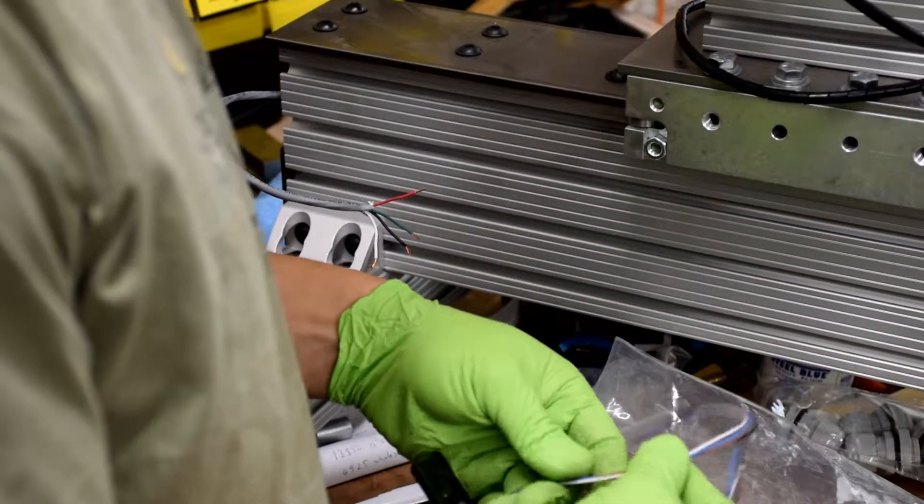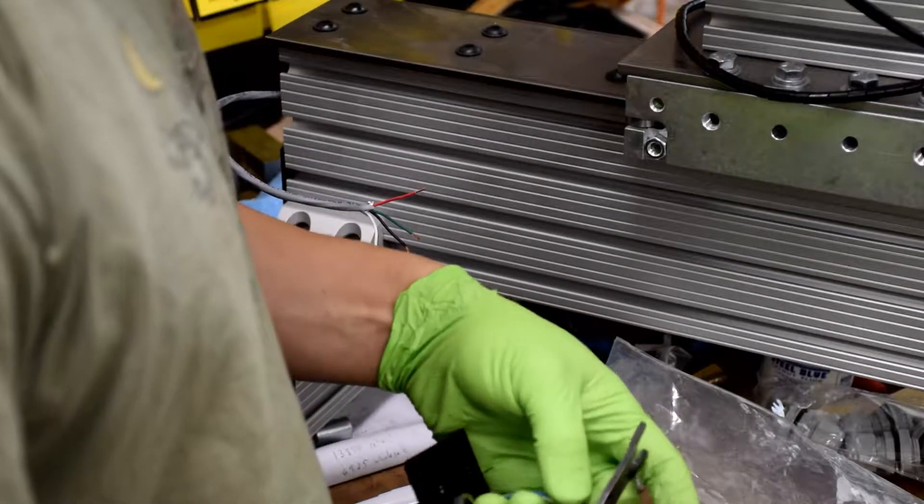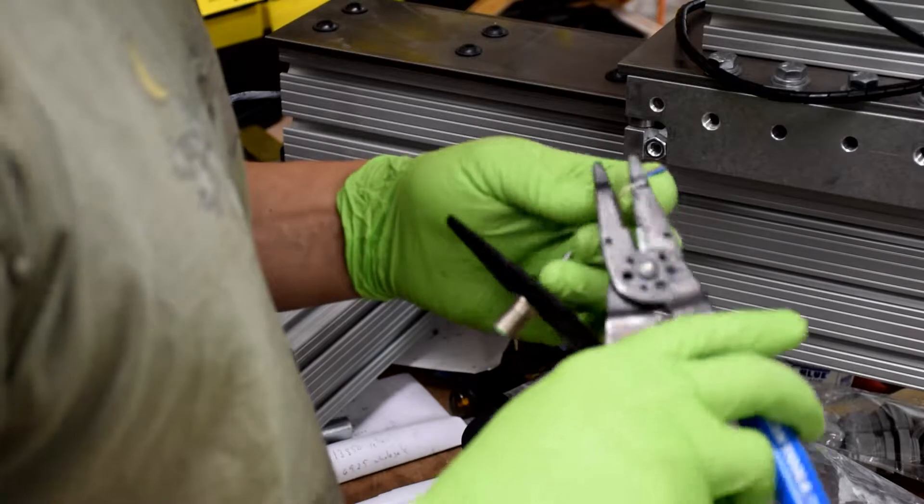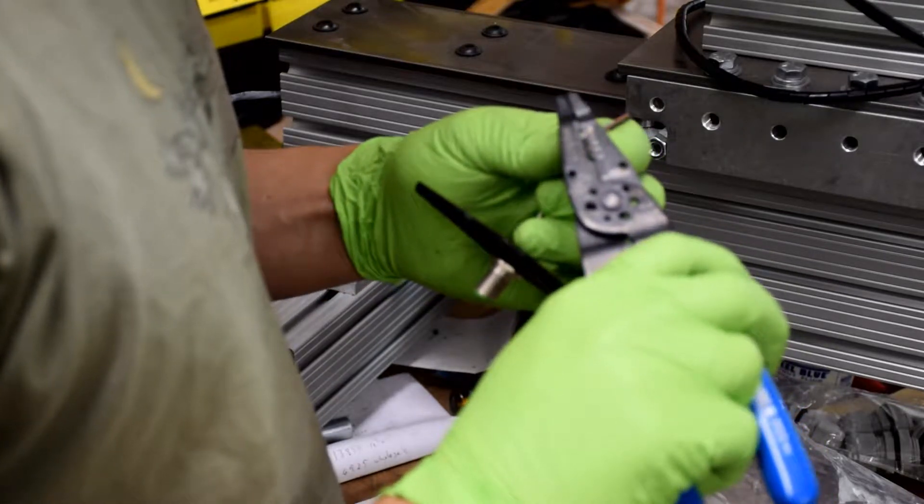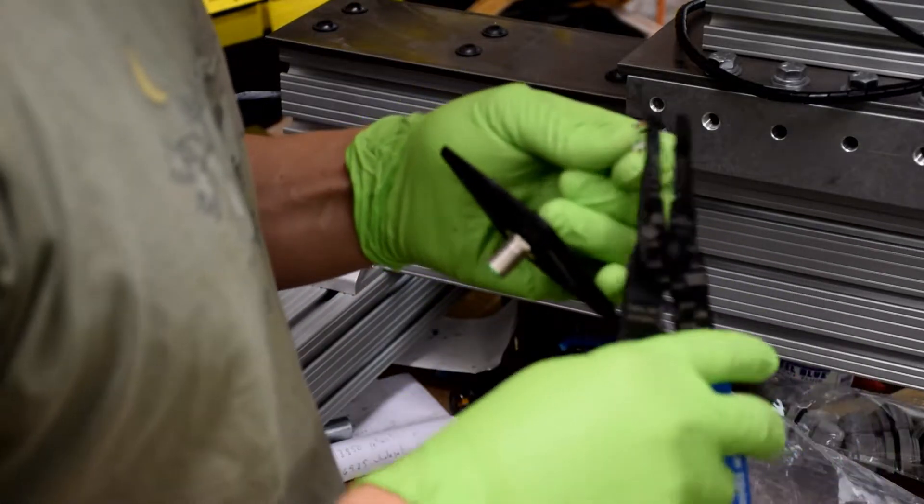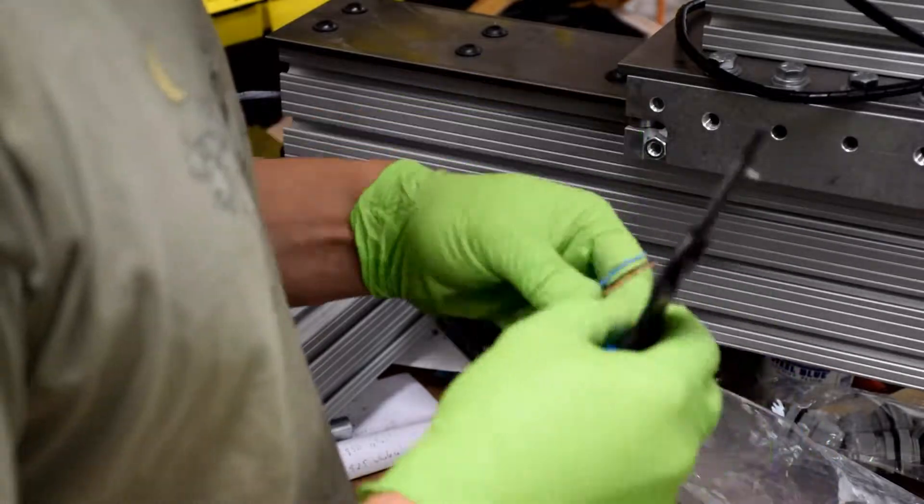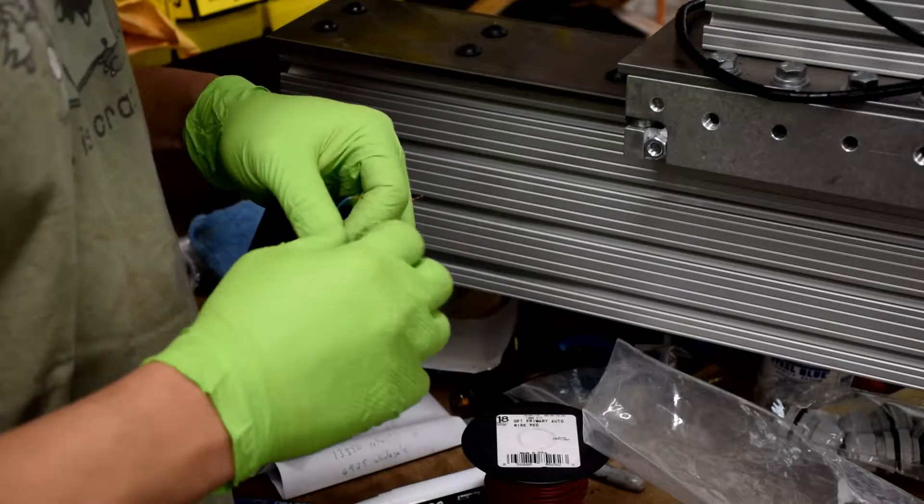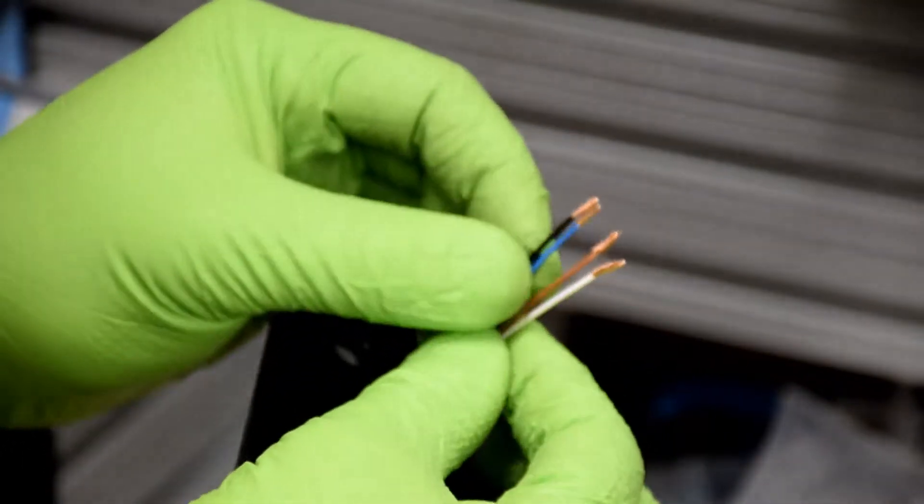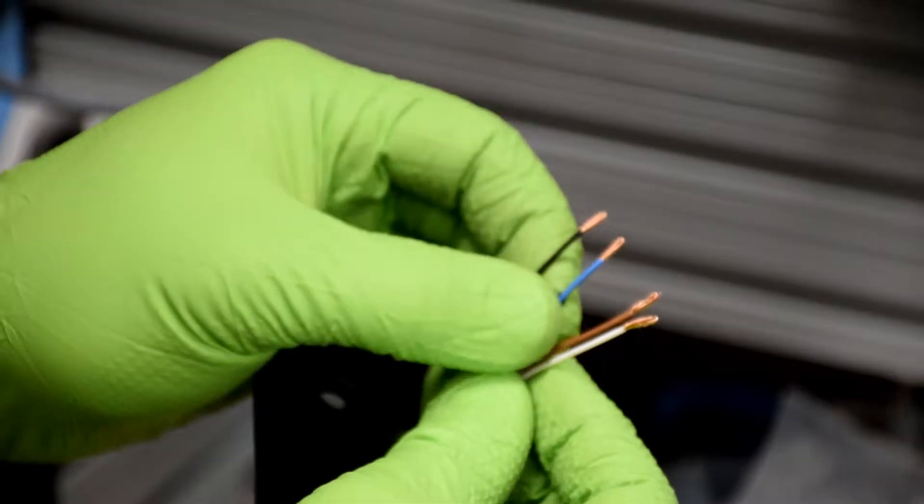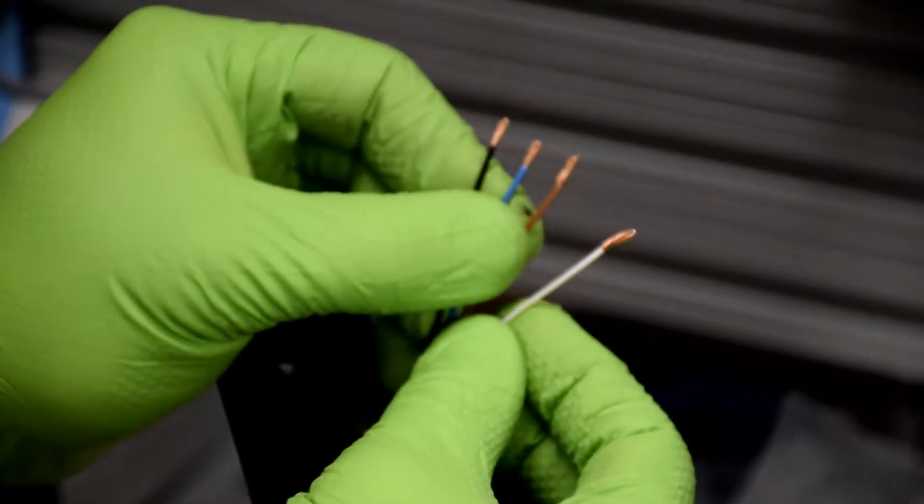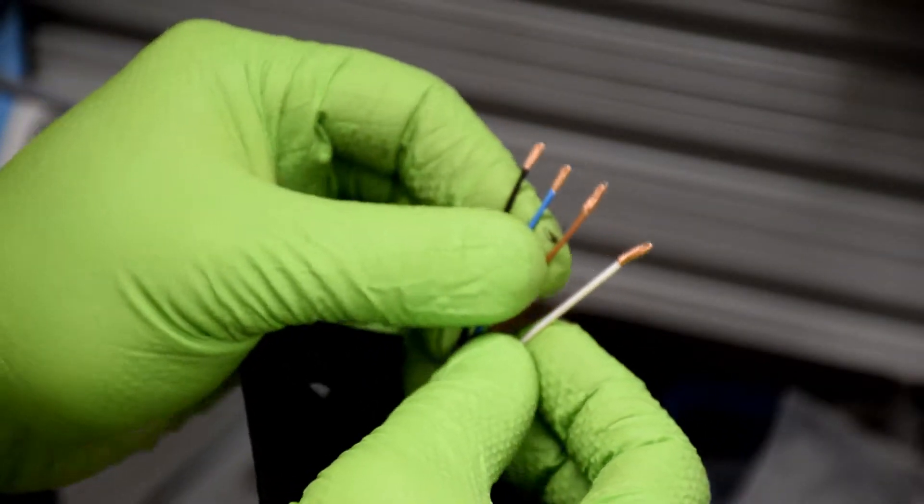Take the bulkhead connector that you mounted into the end cap and trim up some of those wires. Leave about 3 to 4 inches and then strip those wires away and twist the ends. Just a little detail here: strip off enough wire that you can fold it back on itself and twist it up. These wires are kind of thin and this helps with the connection that we're going to make.